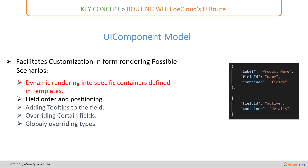The first scenario is dynamic rendering of content into specific containers defined in templates. Assuming a template has two containers — 'fields' and 'details' — by mentioning the field ID you can specify which property from the product model should be rendered into which container. For example, 'name' is rendered into 'fields' and the field 'active' goes into the 'details' container.